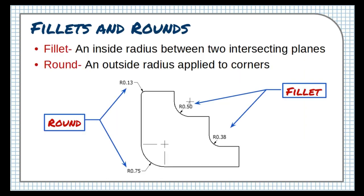Two terms that frequently get confused are fillets and rounds. Fillets are rounded interior corners, and rounds are rounded exterior corners. A round is used to avoid sharp edges for safety and handling. A fillet is used to provide strength at inside corners to avoid parts breaking.